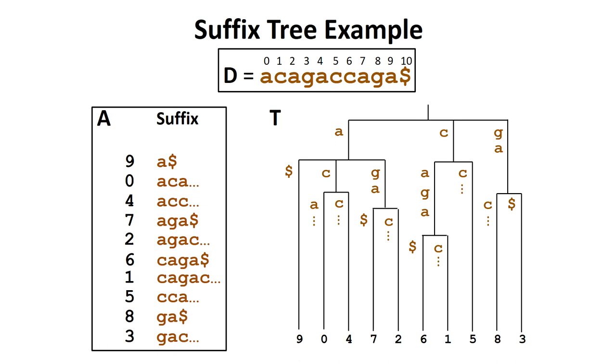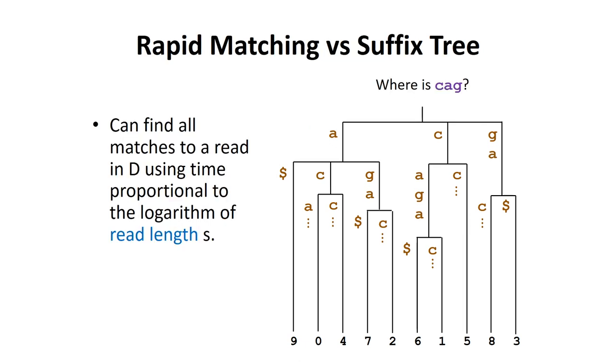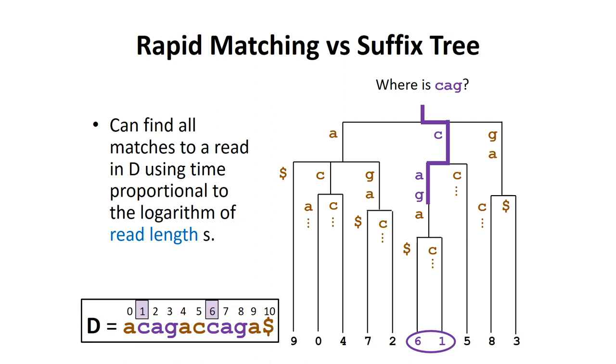After we have created the suffix tree, it now becomes much easier to find all the matches to a read in the database. For example, if we want to find the sequence c, a, g in our database, we simply follow the branches of the tree until we match the entire read and report the positions in the leaves, in this case, positions 1 and 6.